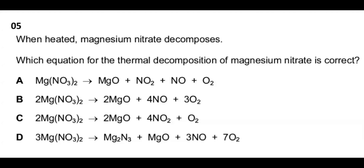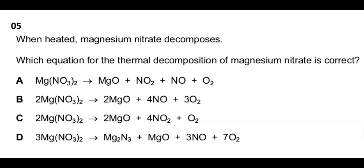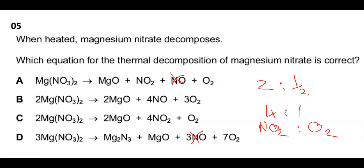Next question: which equation for the thermal decomposition of magnesium nitrate is correct? Mg(NO₃)₂ decomposes to produce NO₂ and O₂. The unbalanced ratio is 1 : 2 : 0.5. Scaling up by 2 gives 2 moles of Mg(NO₃)₂ producing 4 moles of NO₂ and 1 mole of O₂, which corresponds to option C.